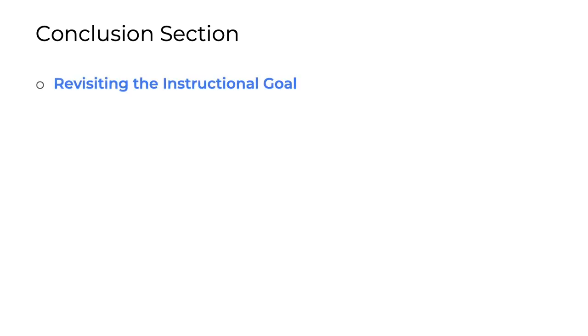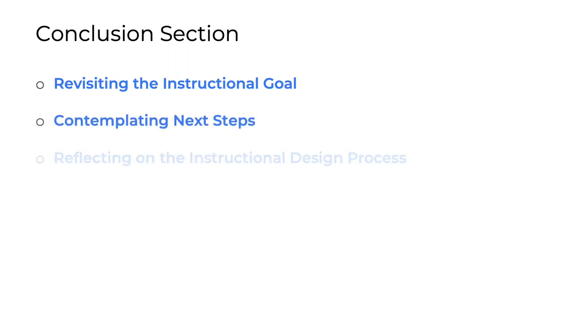Now let's talk about writing the conclusion section. In general, the conclusion section is going to be relatively short — about a page, give or take. You need to briefly touch upon three topics: revisit the instructional goal, contemplate possible next steps, and reflect on the instructional design process overall.